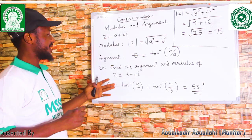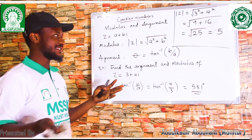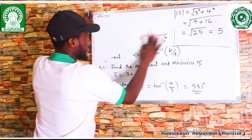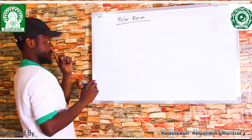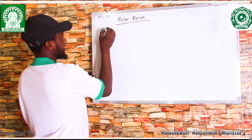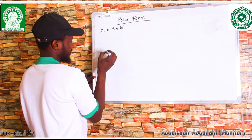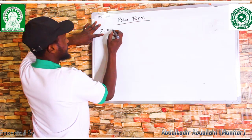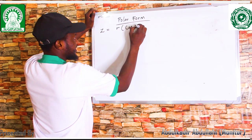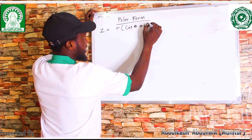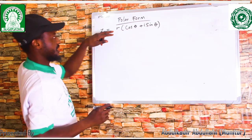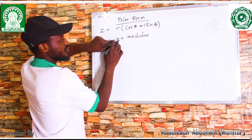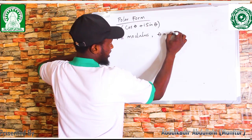Having known how to find the modulus and argument, let's now see how to express a complex number in polar form. The polar form of a given complex number z is expressed as r times (cos theta + i sine theta). Here, r is the modulus of the complex number, while theta is the argument.